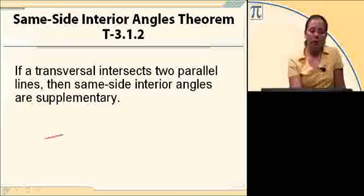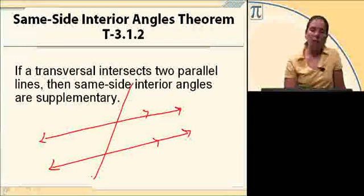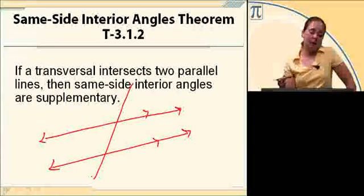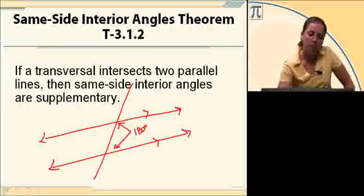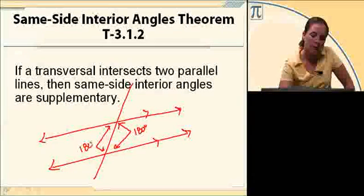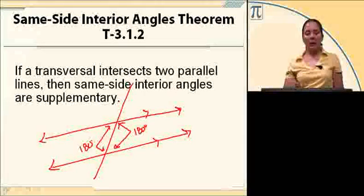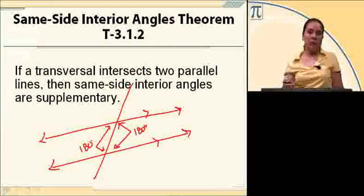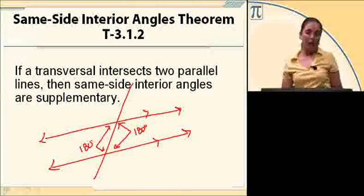Same idea — parallel lines cut by a transversal. Same side interior angles are supplementary. That means these two angles add to equal 180 degrees, and likewise for the other pairs. Same side interior angles are supplementary when you have a transversal intersecting two parallel lines.